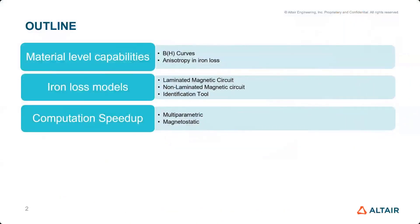In these 10 minutes, I'm going to talk about the different models of materials, the different methods we have for iron loss computations for laminated and non-laminated materials, and then how we can also speed up this computation using new magnetostatic methods.